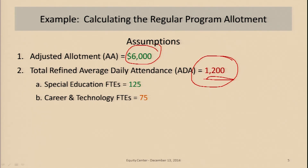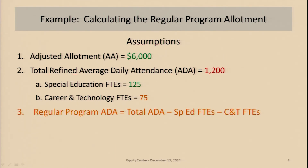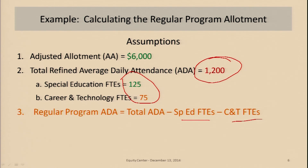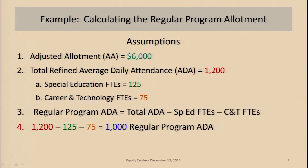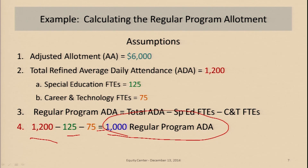We're going to say that the total full ADA is 1,200. We'll assume that the special ed FTEs — full-time equivalencies for special education — counted out to be 125, and the FTEs for career and technology were 75. In order to get your regular program ADA, you start with your total refined ADA and subtract out your FTEs: total ADA minus special ed, minus career and technology FTEs. So: 1,200 minus 125 special ed FTEs, minus 75 career and technology FTEs, gives this district 1,000 regular program ADA.